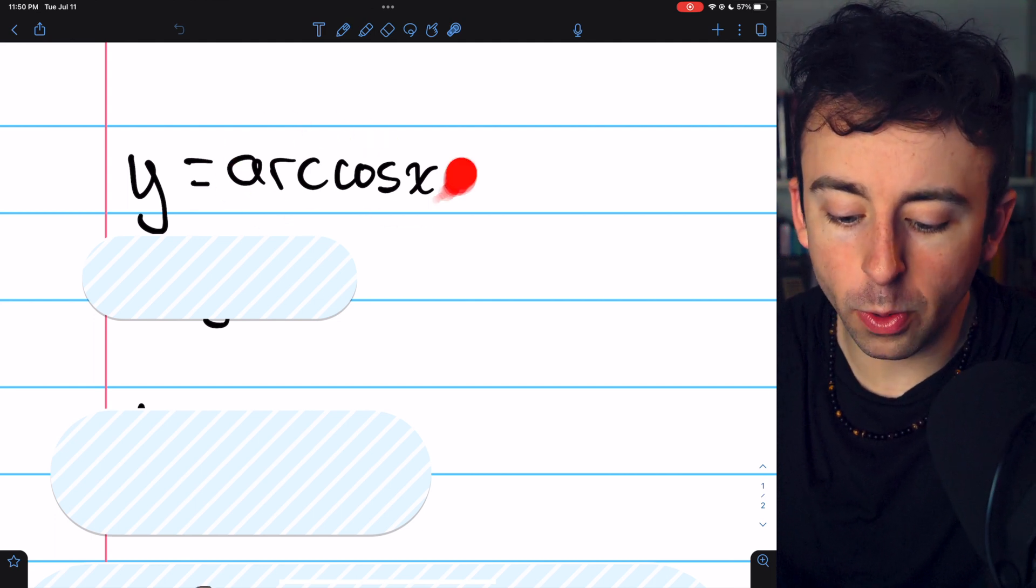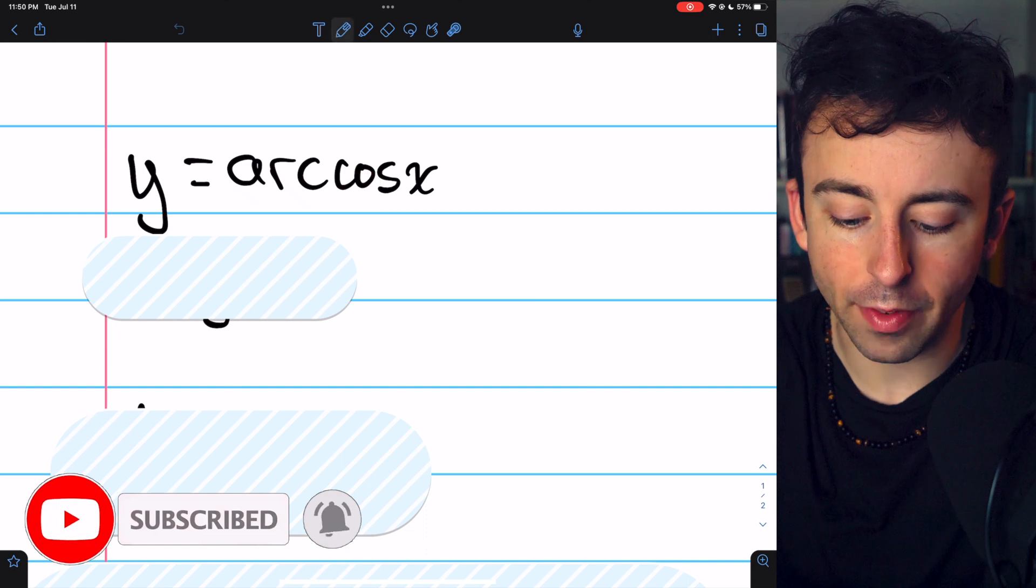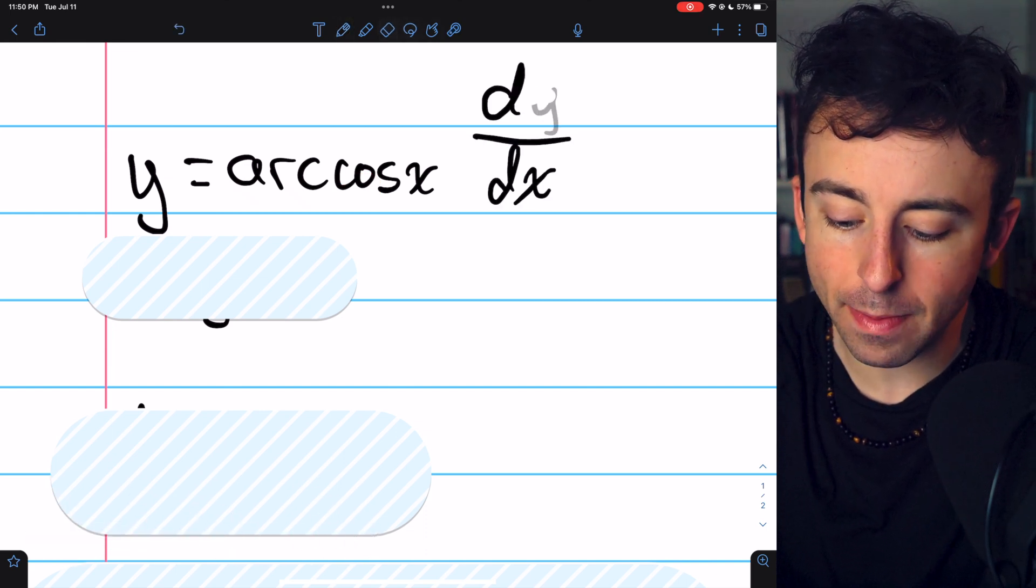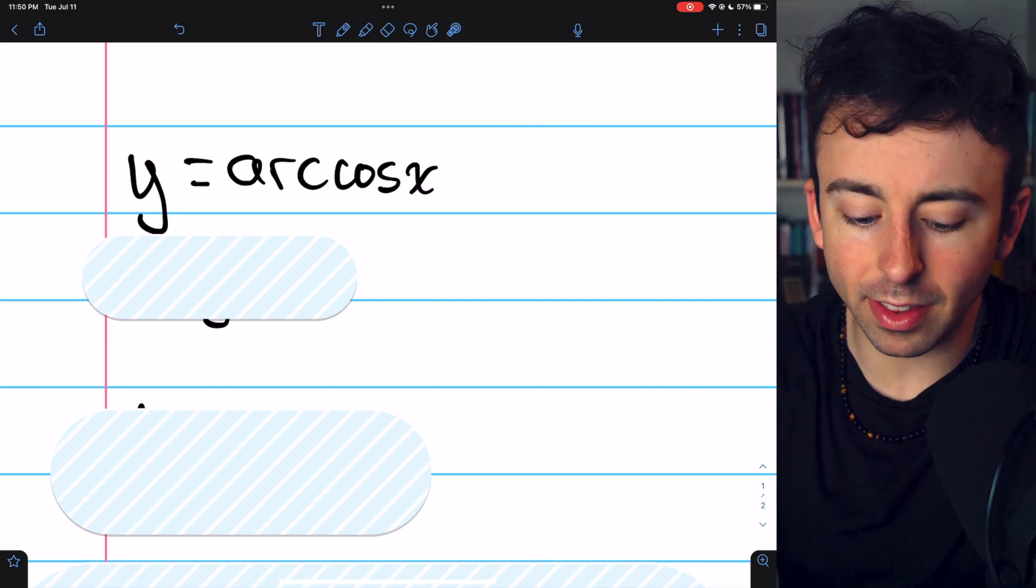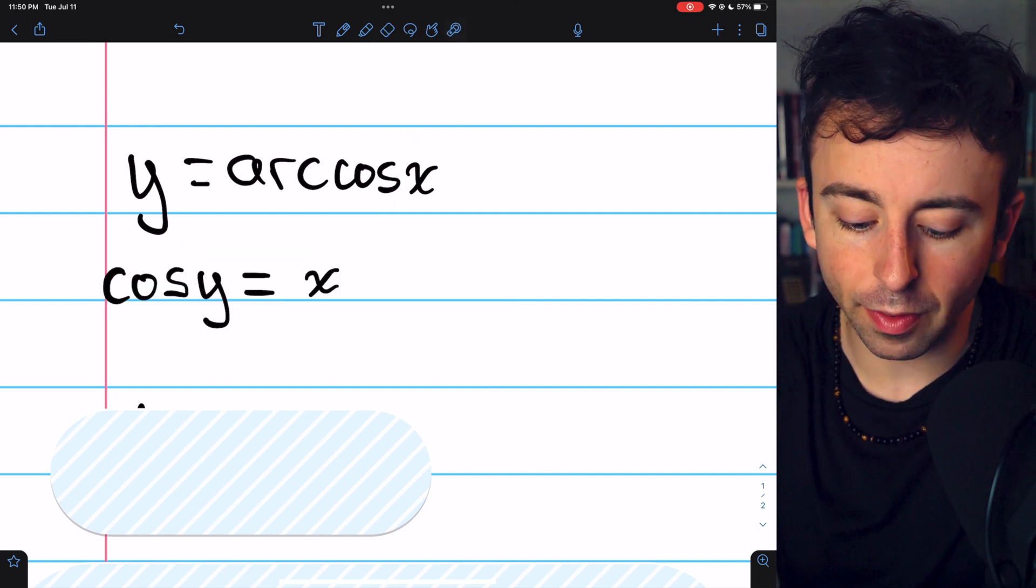To find the derivative of arc cosine of x, let's say y equals arc cosine of x, and then we'll find dy/dx using implicit differentiation. For our first step, let's just take the cosine of both sides of this equation. That way, on the left,